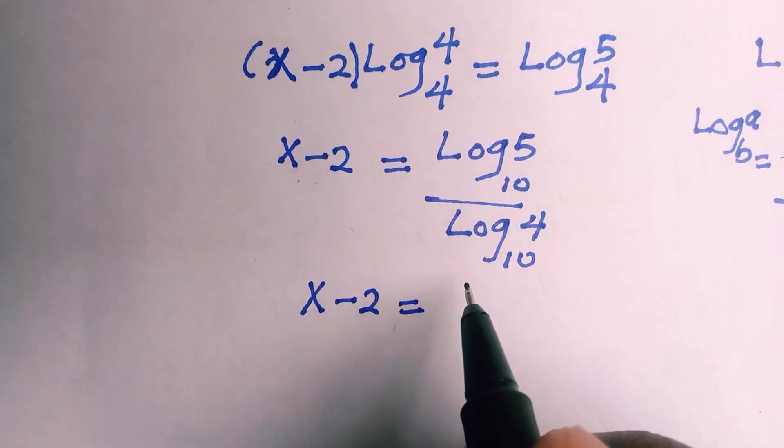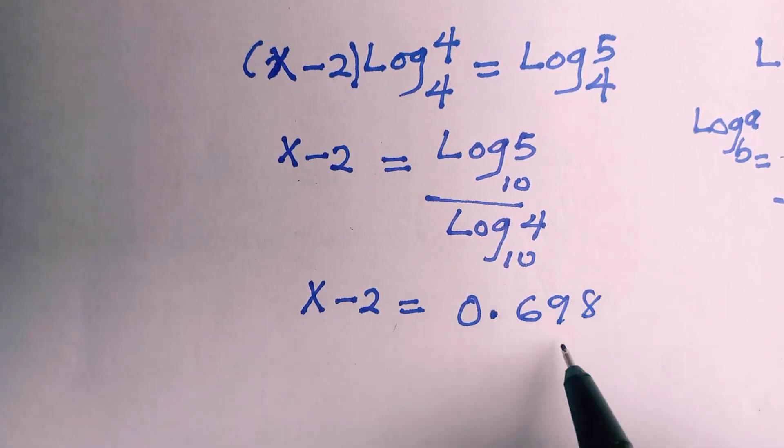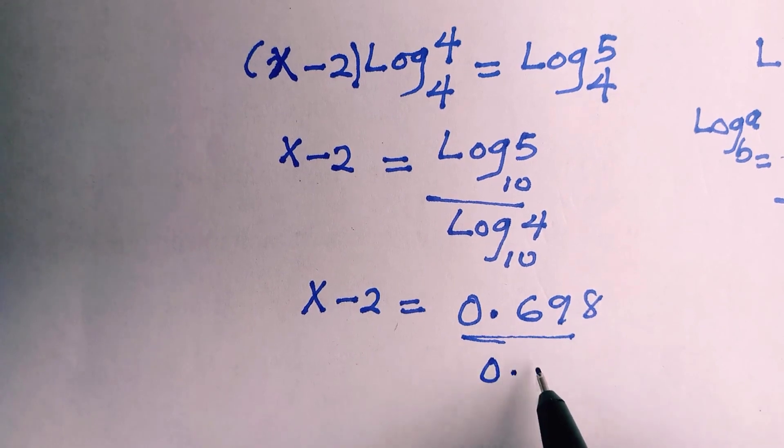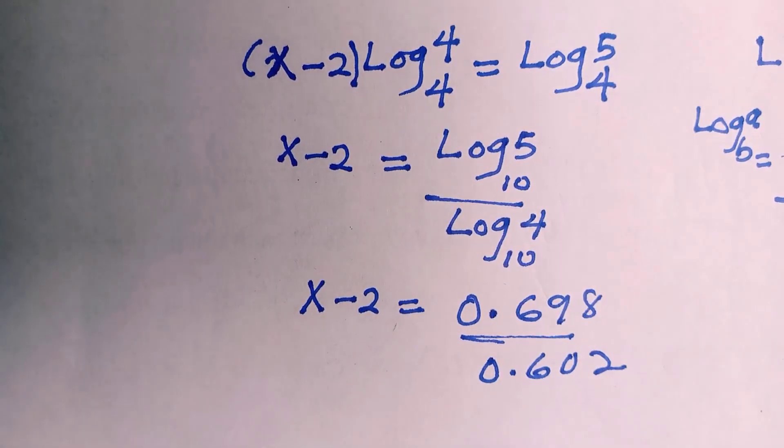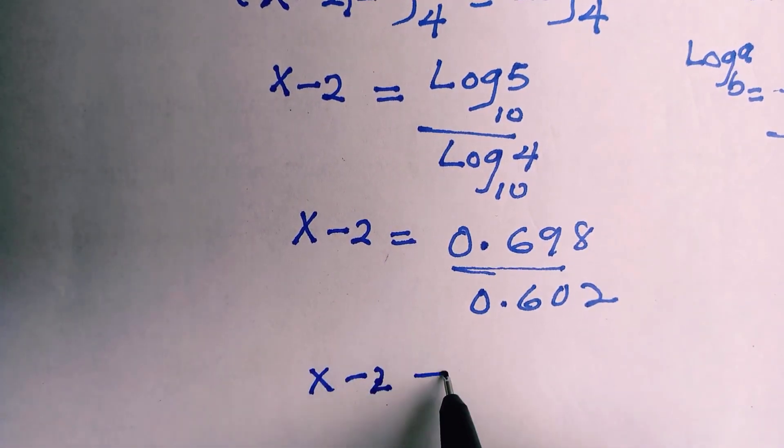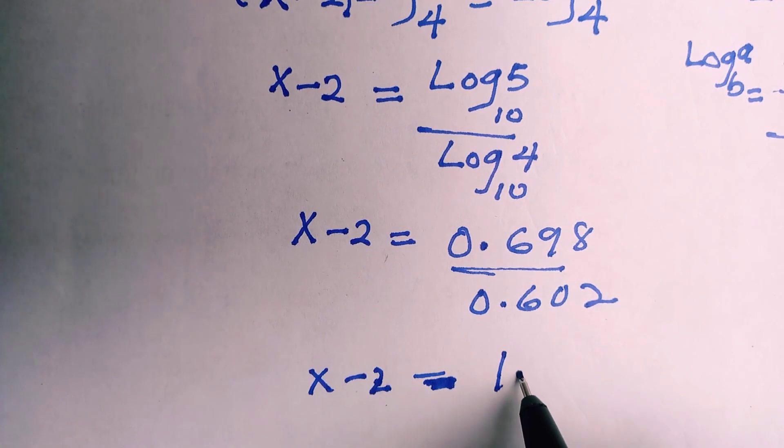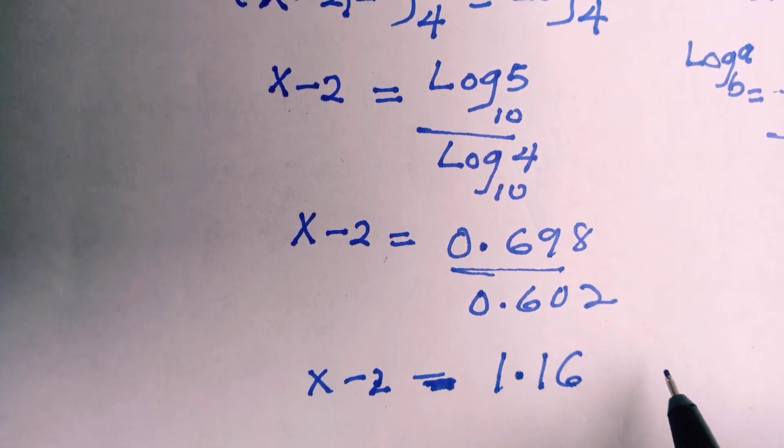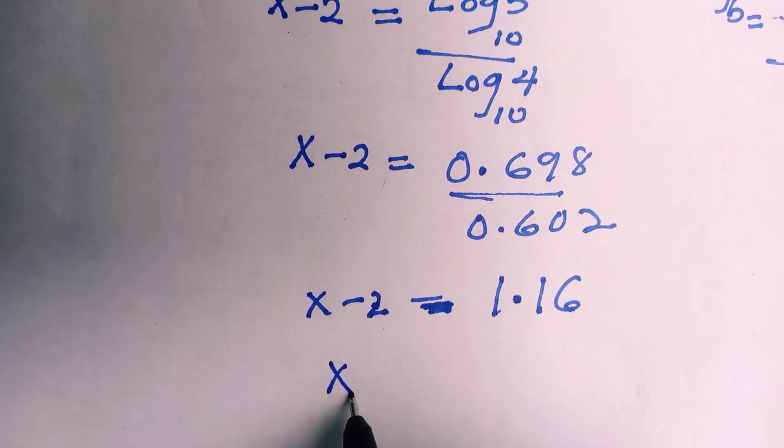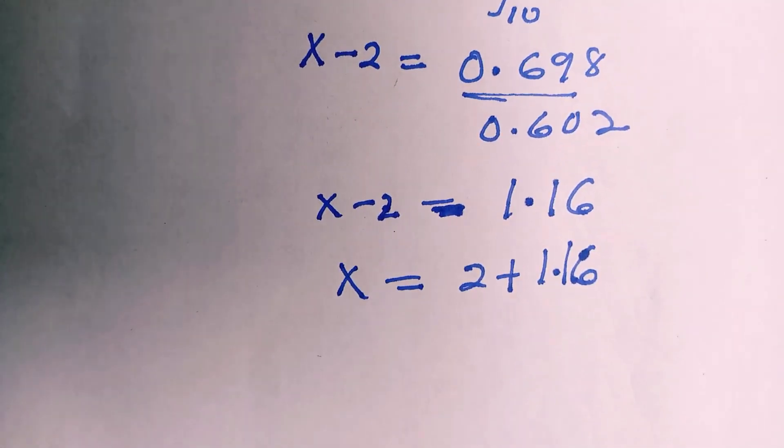So at this stage I'm going to find the value of logarithm of 5 and 4. If you calculate the log of 5, it gives you 0.698, and then the log of 4 gives us 0.602 as well. So x minus 2 equals, dividing these two, we are going to have the result to be 1.16. And the next thing is we find the value of x which is 2 plus 1.16, and adding these two together the final result is 3.16.